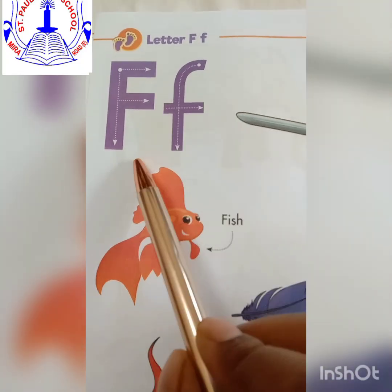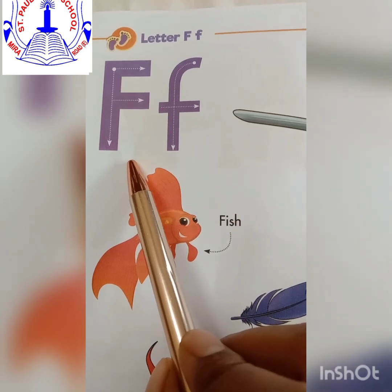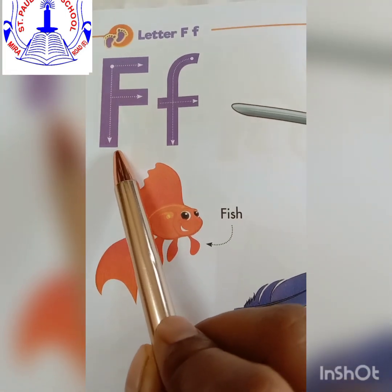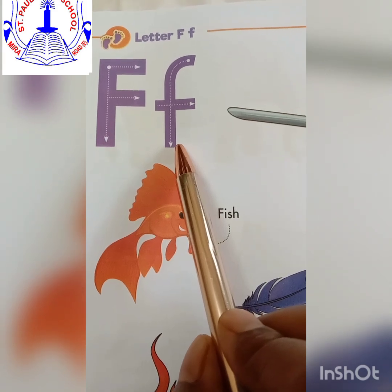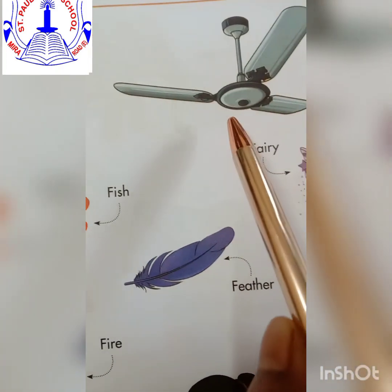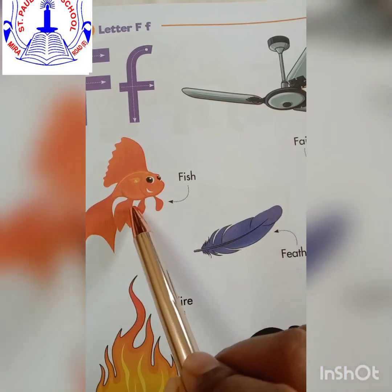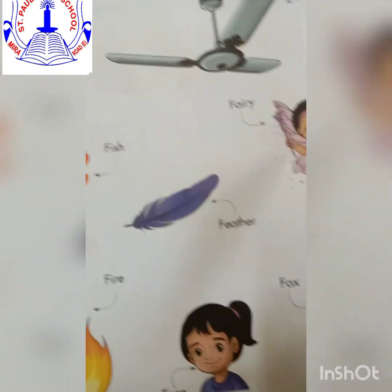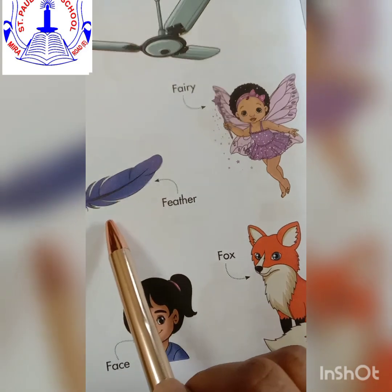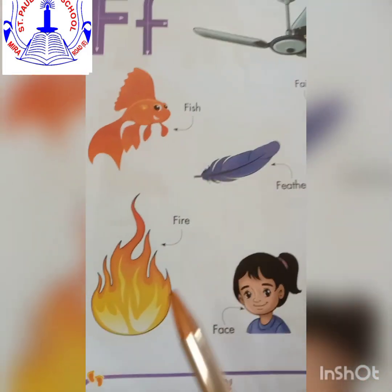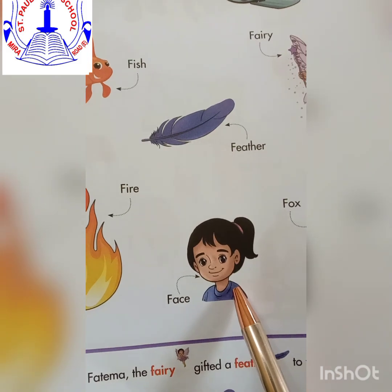Now we are going to learn the letter F. This is capital F and this is small f. F says 'f': fan, fish, fairy, feather, fire, face.